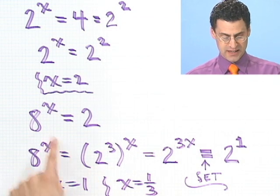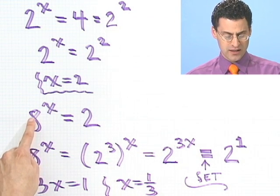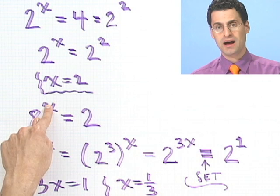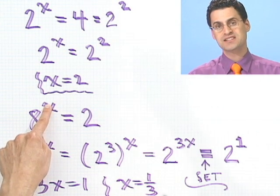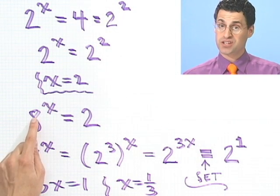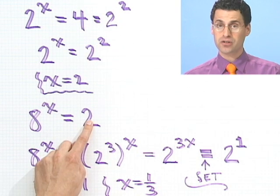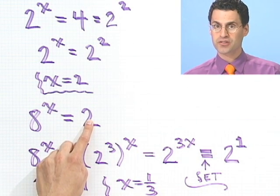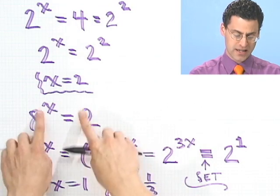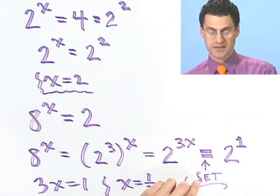And so that must be the answer. And we can check it by taking a third and putting it in here. What is 8 to the 1 third power? Well, remember, 1 third means cube root. And what's the cube root of 8? Well, indeed, it is 2. Because 2 times 2 times 2 is 8. So in fact, this method works whenever you can actually get the bases to be the same value.